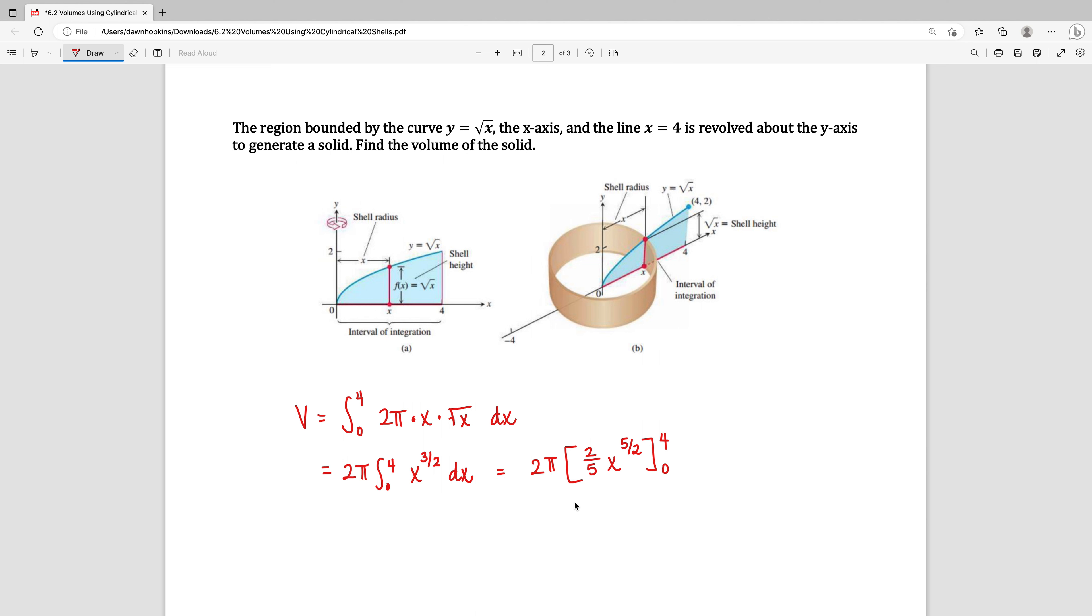The square root of 4 is 2. 2 to the 5th power is 32. So I've got 2 fifths times 32, which is 64 fifths. And we plug in 0, we're going to get 0. So we have 2 pi times 64 fifths, which gives us a volume of 128 fifths pi.